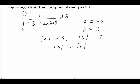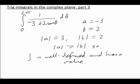a is negative 3, b is 2, and the absolute value of a is greater than the absolute value of b. That means that the integral is well defined. There should be no problems with infinities, and we ought to be able to find a value.